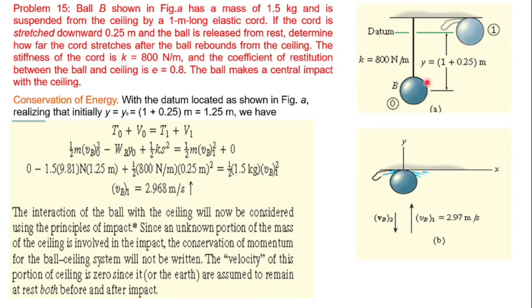When the cord is stressed down 0.25 meter and the ball is released from rest, we need to determine how far the cord stretches after the ball rebounds from the ceiling. The stiffness of the cord is given, and the coefficient of restitution applies because the ball makes a central impact with the ceiling.